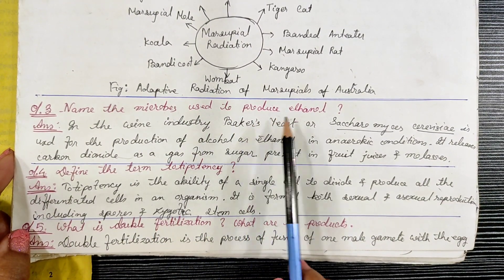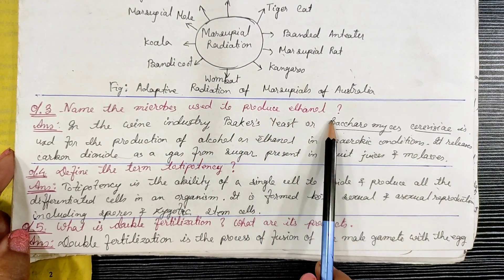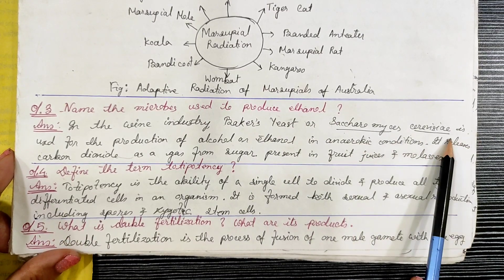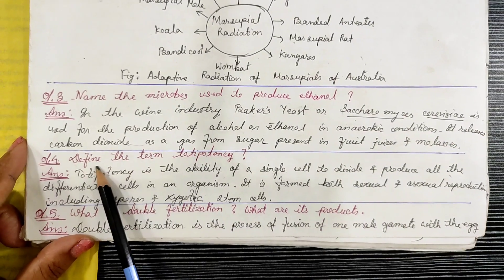Next question: name the microbes used to produce ethanol. The answer is Saccharomyces cerevisiae.